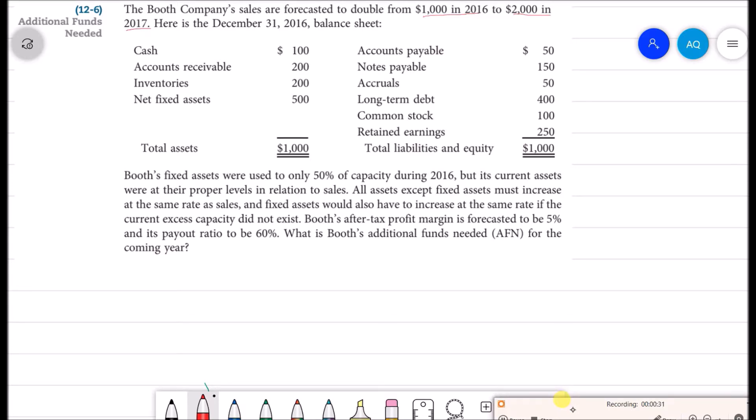Booth fixed assets were used to only 50% of capacity during 2016. Fixed assets can generate a limited number of output, so they operate on their capacity. But currently the company has fixed assets of $500 and their plants are being run at 50% capacity.